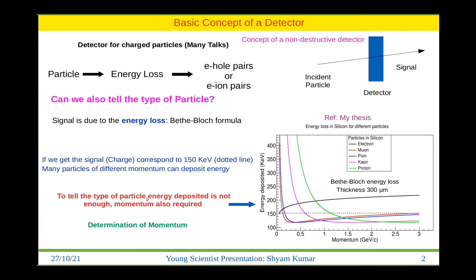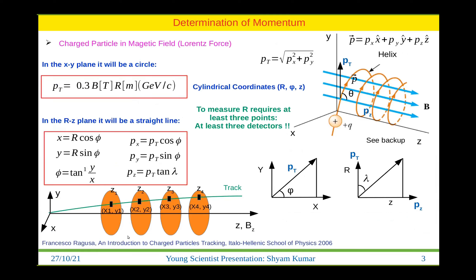If we want to tell the type of particle, energy deposited is not enough — we also require momentum. Now, since we have a charged particle in a magnetic field, it experiences the Lorentz force. When the charged particle passes through the magnetic field, it follows a helical trajectory. Projected on the xy plane it will be a circle, from which we can determine pT by measuring the radius of curvature.